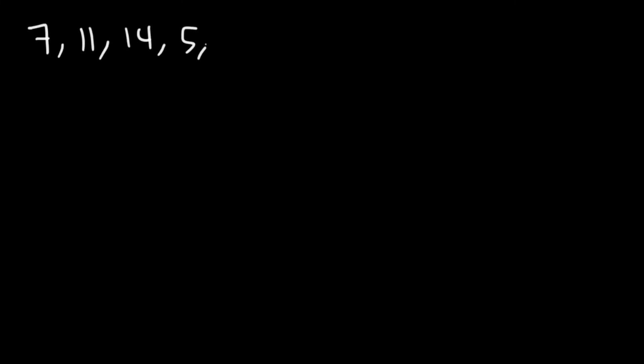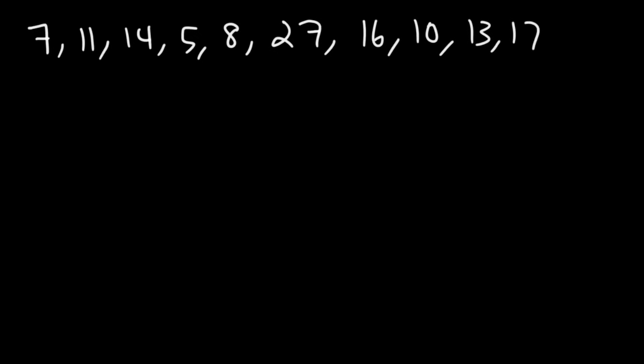Let's say we have the numbers 7, 11, 14, 5, 8, 27, 16, 10, 13, 17, and 16. Go ahead and identify Q1, Q2, and Q3, calculate the interquartile range, and determine if there are any outliers in this data set. Feel free to pause the video and try it.